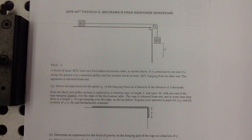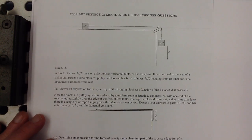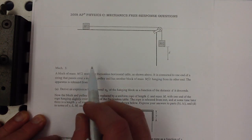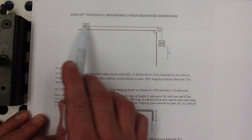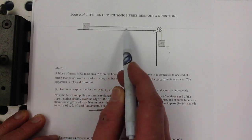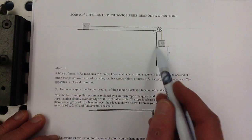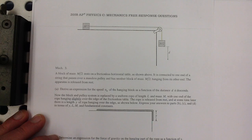OK, 2009, number 3. For the first part, we've got two blocks, m over 2, m over 2. This one's on a frictionless horizontal table, and this one is free to fall like this.